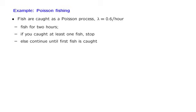In this segment, we go through an example to get some practice with Poisson process calculations. The example is as follows: you go fishing, and fish are caught according to a Poisson process with an arrival rate — that is, the rate at which fish are caught — of 0.6 fish per hour.